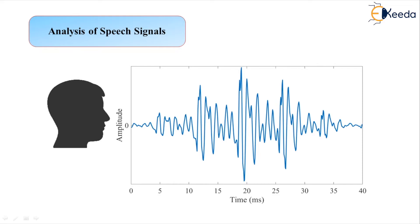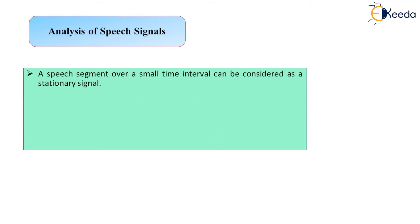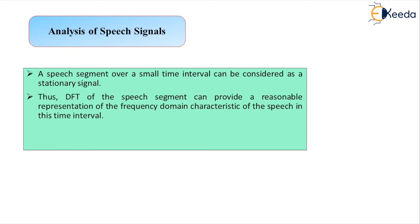The speech signal is basically composed of two types of basic waveforms: voiced waveform and unvoiced waveform or unvoiced sound. We also know that if a speech segment is observed over a small time, it can be considered as a stationary signal. Because of the overall non-stationarity, we do not directly apply Fourier transformation over it. Instead, we prefer the Short-Time Fourier Transform, also called the Windowed Fourier Transform. Applying it means applying the Discrete Fourier Transform to the speech segment for a very short time, which provides a reasonable representation of the frequency domain characteristics of the speech in that limited time interval.